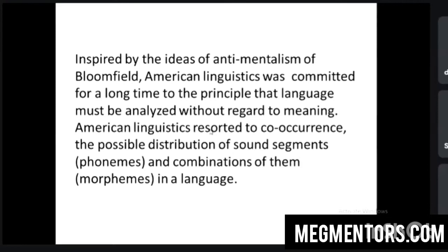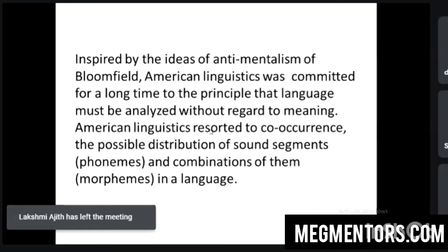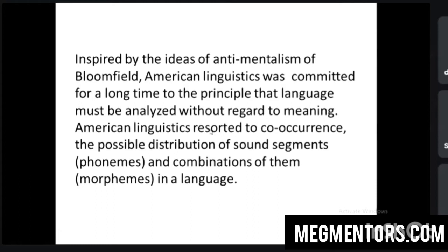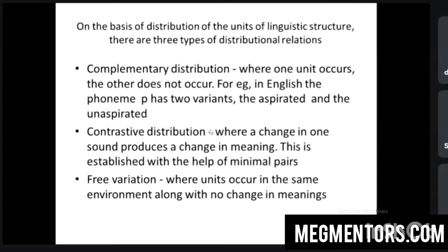As Bloomfield was the father of American structuralism, he had many followers, and American linguistics was basically based on his principles for quite a long time. They completely ignored meaning and instead resorted to co-occurrence — the way elements can combine in a language or structure. So they focused more on combinations and associations. Their ideas are based on distribution and association of elements in a structure.